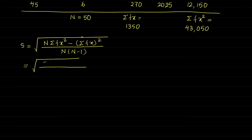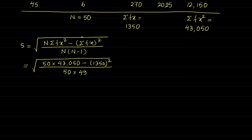Now before substituting the values: N is 50, then summation FX² which is equal to 43,050, then minus summation FX whole square — so summation FX whole square will be 1350 squared — divided by N which is 50, then N minus 1 which is equal to 49.